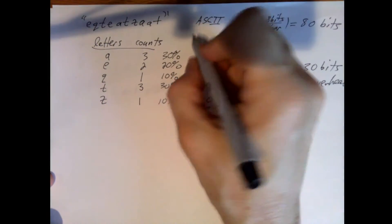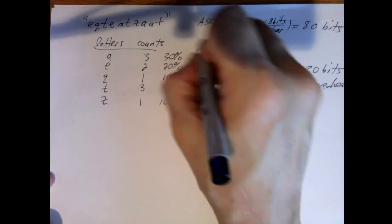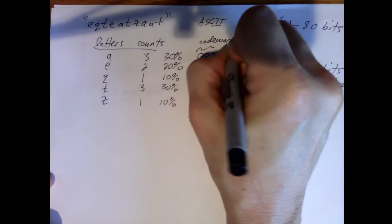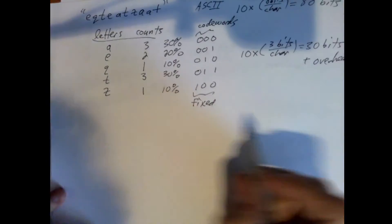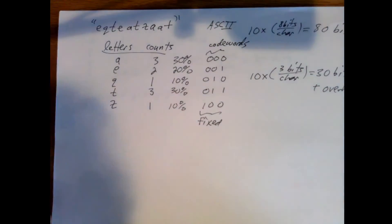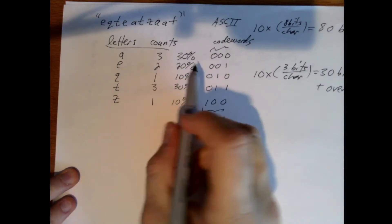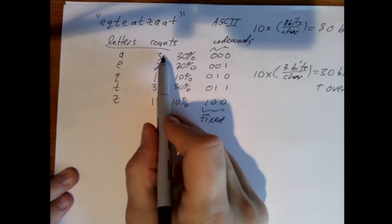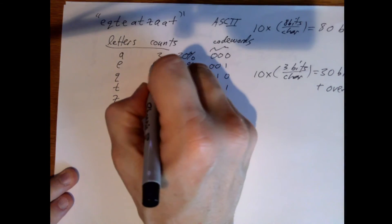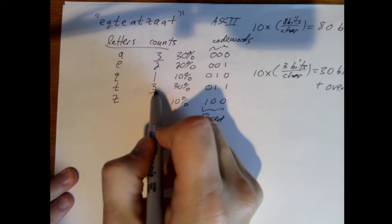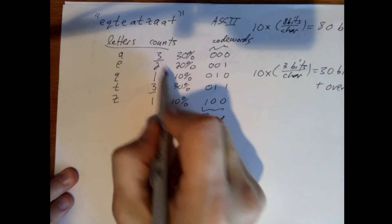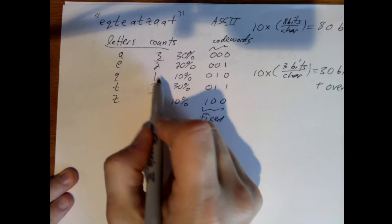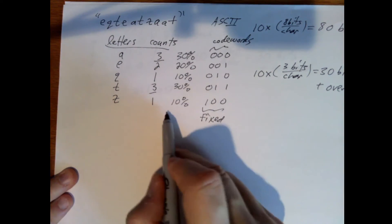With variable-length encoding, these bit patterns are called code words. We want to assign fewer bits to A and T since they occur most frequently (30% each), then to E (20%), and more bits to Q and Z (10% each).